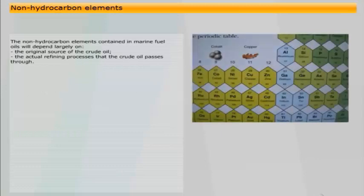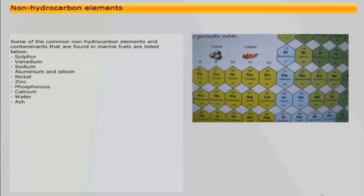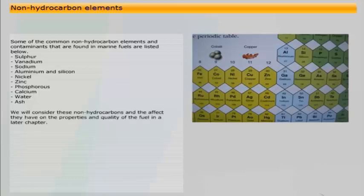The non-hydrocarbon elements contained in marine fuel oils will depend largely on the original source of the crude oil and the actual refining processes that the crude oil passes through. The non-hydrocarbons may take the form of elements which are part of the molecular structure of the various compounds which make up the crude oil. They may be liquid or solid contaminants, either in the original crude or from the refining process, and can also result from transport, storage or treatment processes. Some of the common non-hydrocarbon elements and contaminants found in marine fuels include sulfur, vanadium, sodium, aluminium and silicon, nickel, zinc, phosphorus, calcium, water and ash. These non-hydrocarbons and the effect they have on the properties and quality of the fuel will be considered in a later chapter.